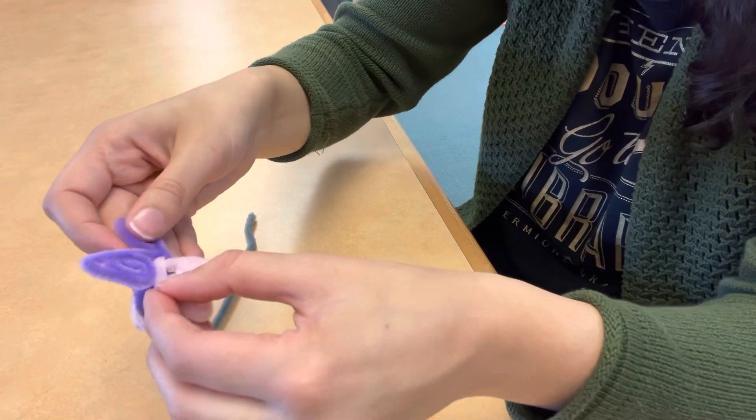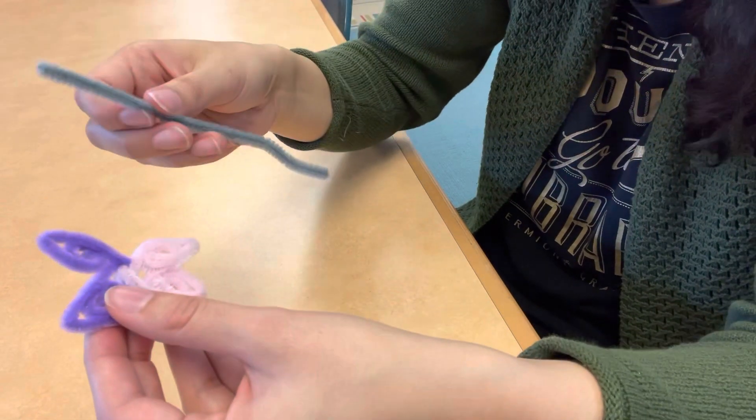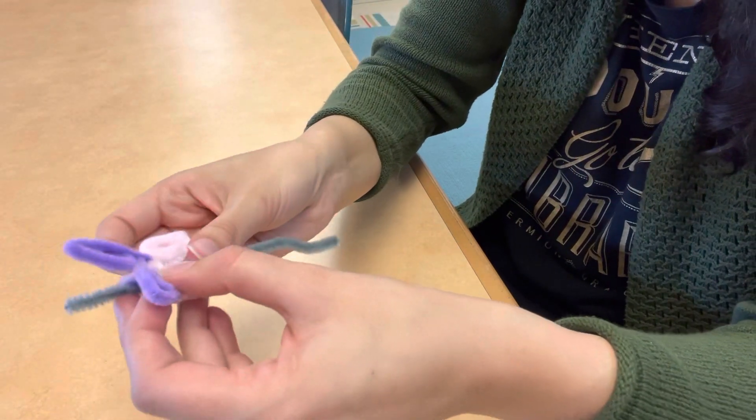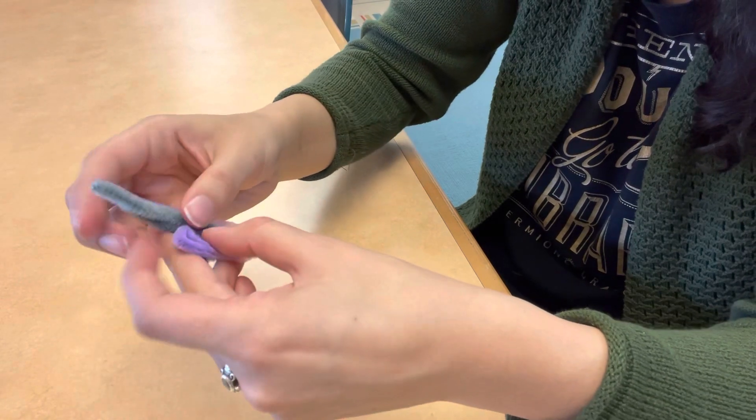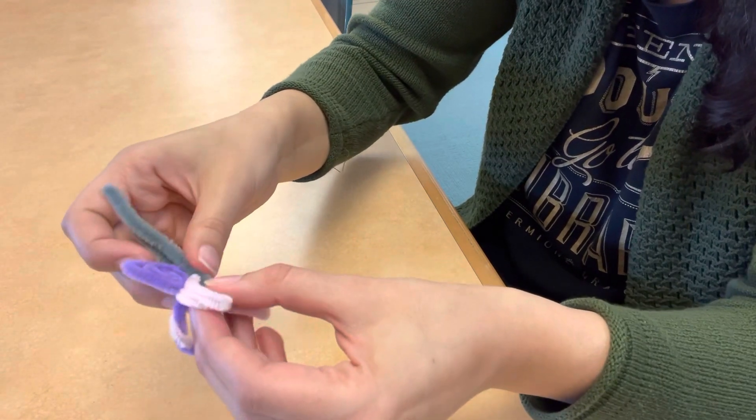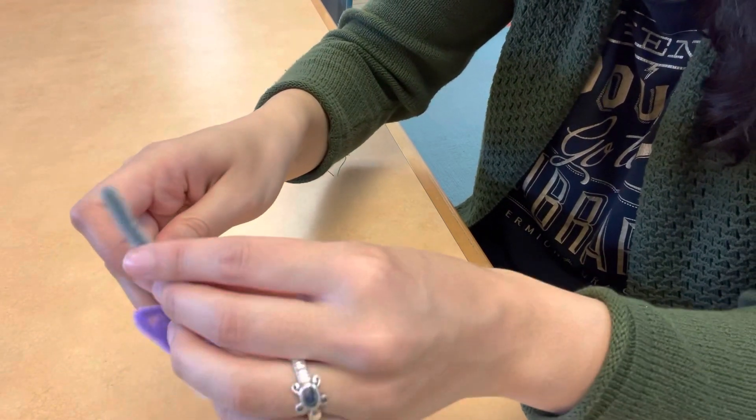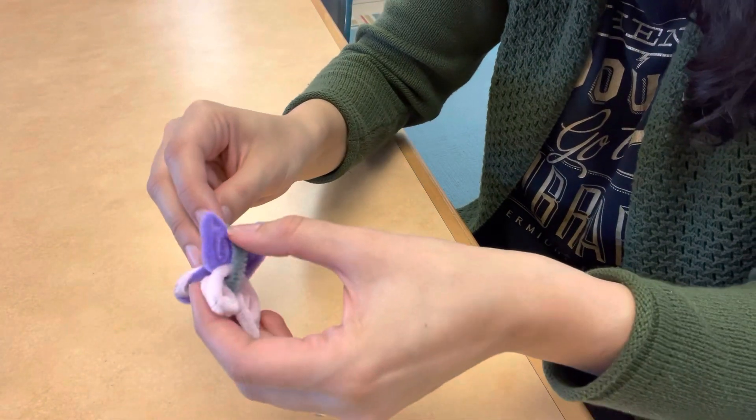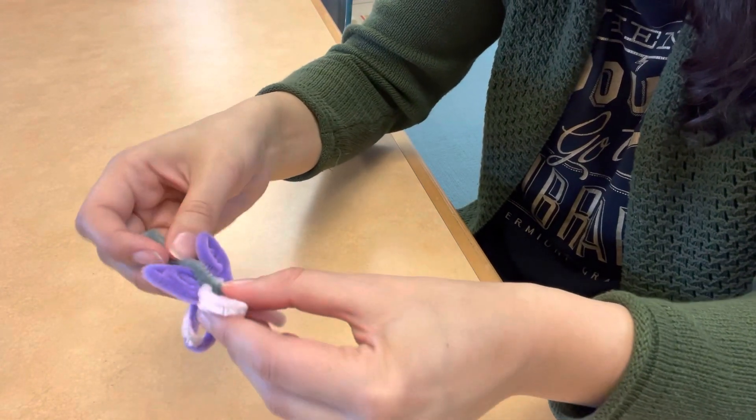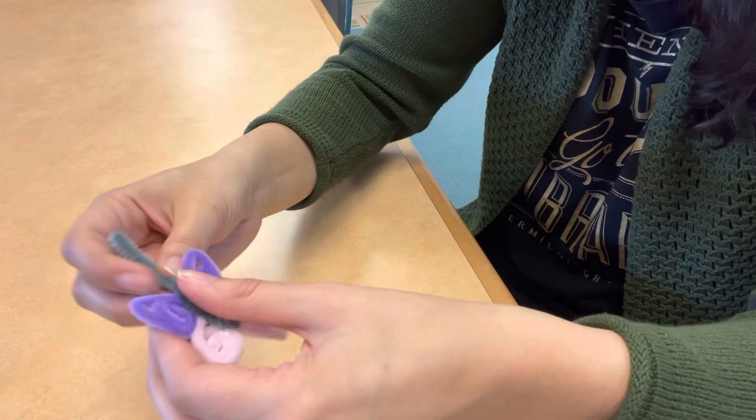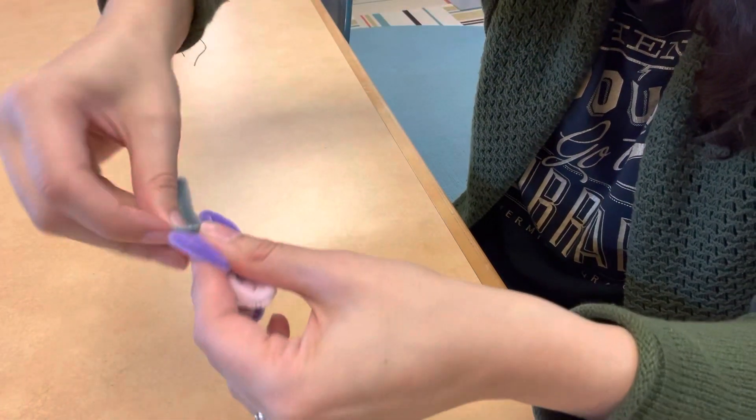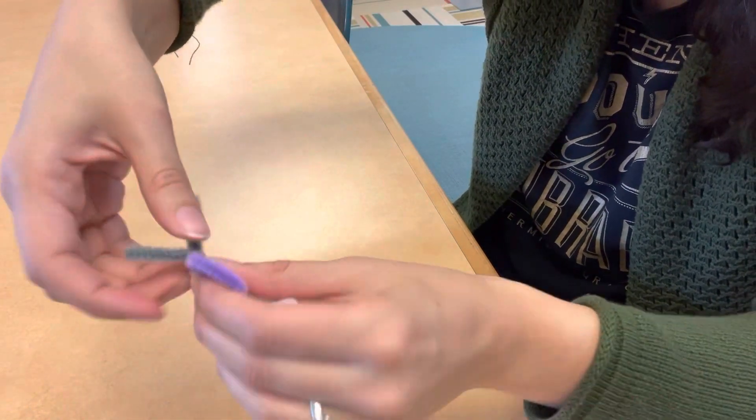When you're done adjusting the wings, you're going to take your small pipe cleaner and put it through the ring and right up the middle of the wings. You just have to make sure that the sides match. And then you're just going to twist it at the top just like this, two, three times, maybe four.